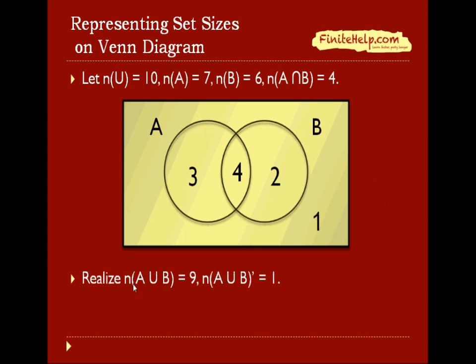So by working through that, we realize that the number of elements in A union B is 9, and the number of elements in A union B prime is 1.